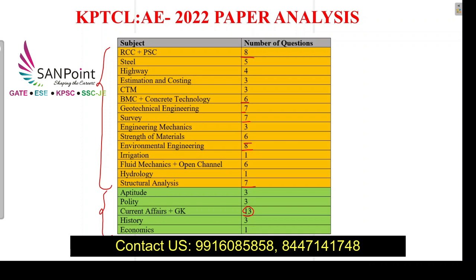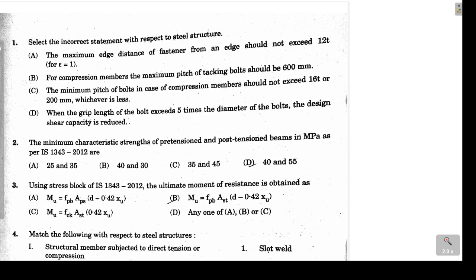Let's start discussing the paper in detail, solving each question. The first question asks us to identify the incorrect statement among four statements from steel structures. Statement A says the maximum edge distance of the fastener from an edge should not exceed 12t. As per code, the maximum edge distance is 12t × ε, where ε = √(250/fy). For mild steel (fy = 250), ε = 1, so this becomes 12t — statement A is correct.